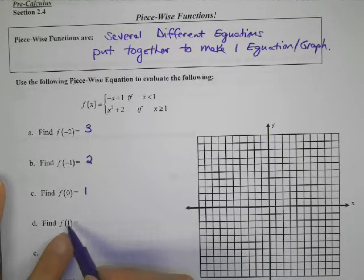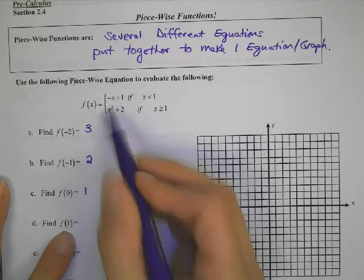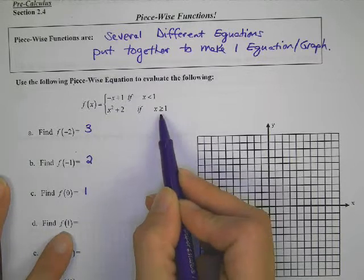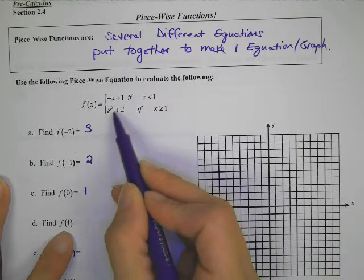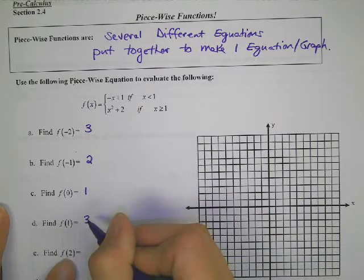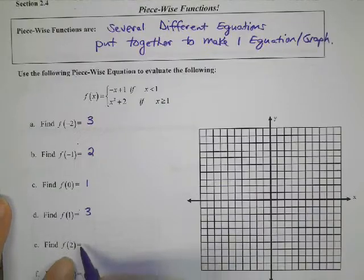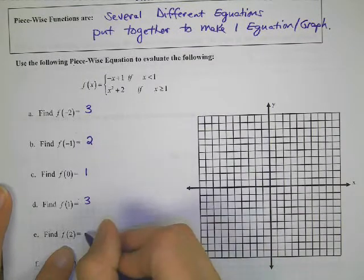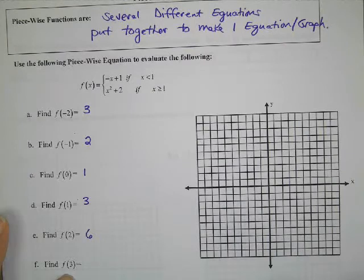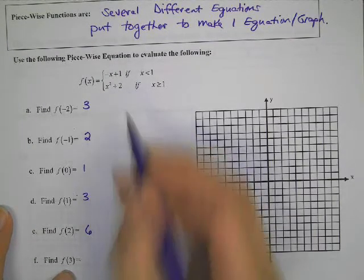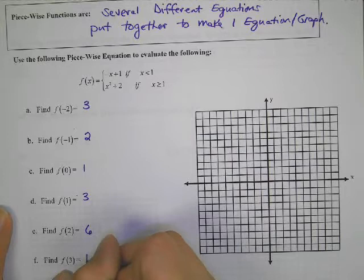How do you evaluate f of 1? One going into this function has to get evaluated here — greater than or equal to 1. One squared plus 2 makes 3. F of 2 is going to go into this bottom part here: 2 squared is 4, plus 2 more makes 6. F of 3 goes into this bottom one here, and that's going to make 11.